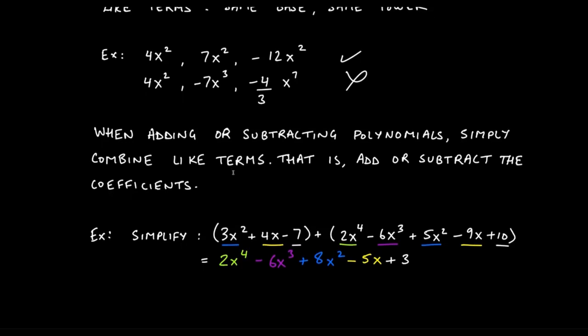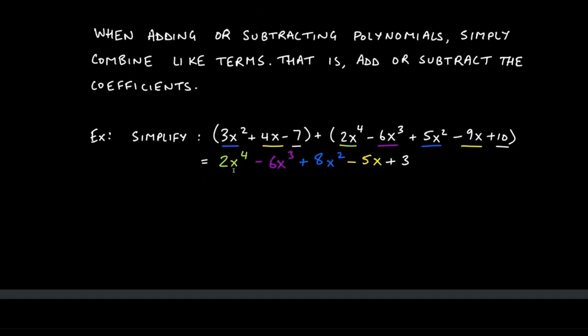Adding or subtracting polynomials hopefully doesn't give people too much trouble. The main problem students typically have is not paying attention to which terms are like terms and which ones are not. To combine like terms when adding or subtracting polynomials, all you have to do is add or subtract the coefficients — the numbers next to the variables.